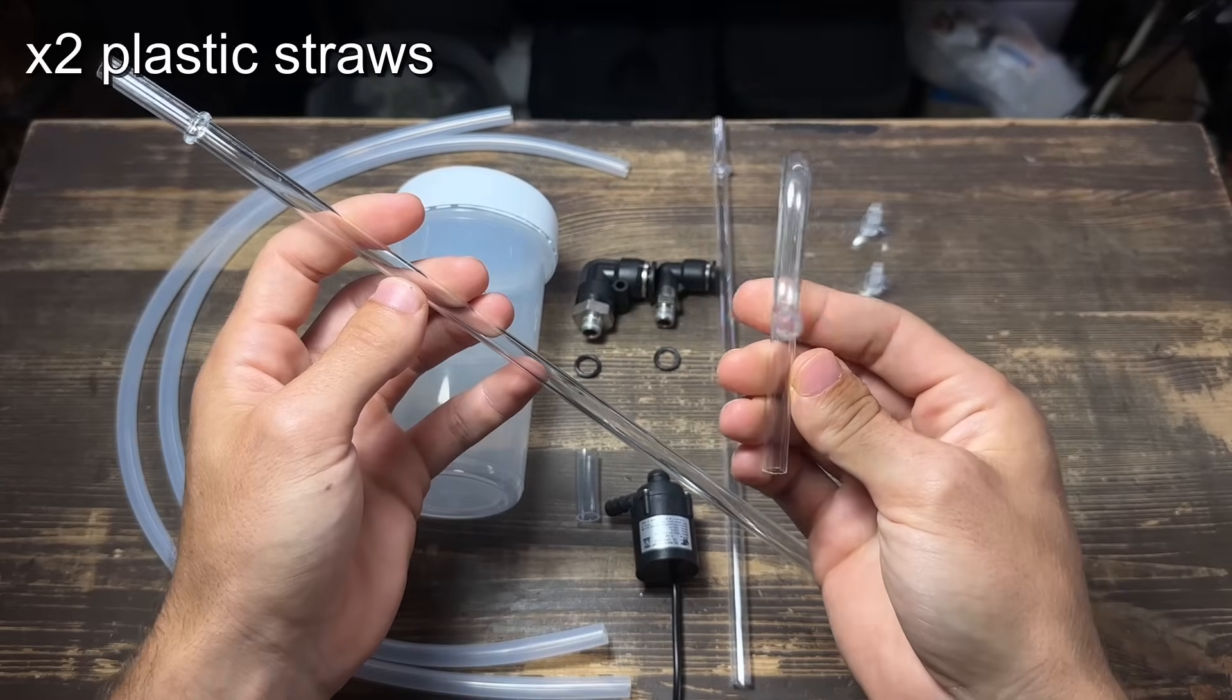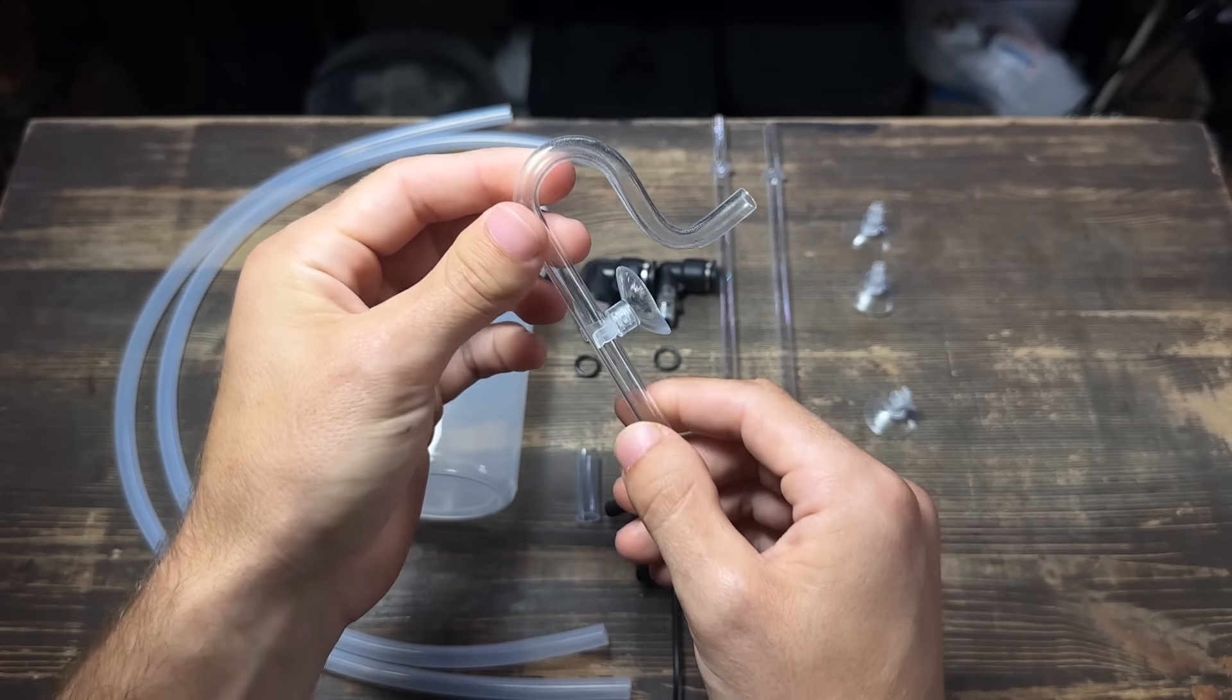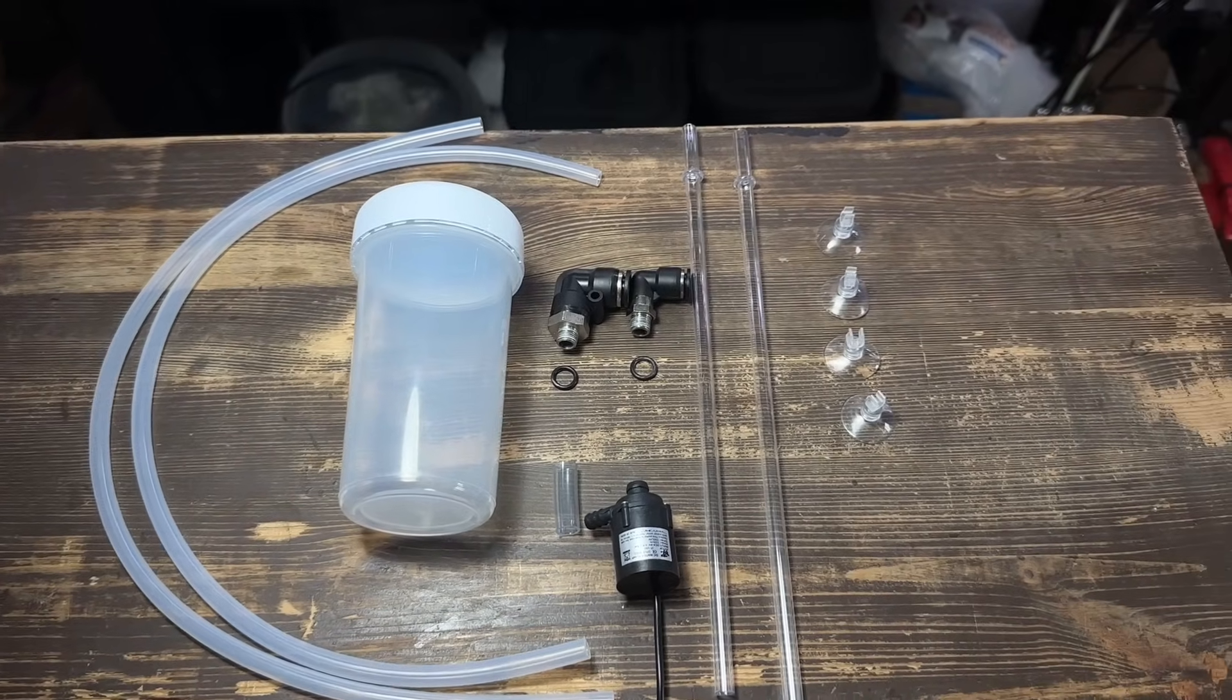To make the lily pipes I'll use these high grade plastic straws along with some suction cups that will hold them to the glass. I'll make sure to put some links for all these materials in the description below.